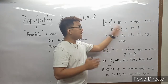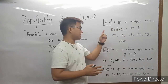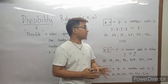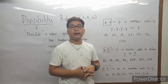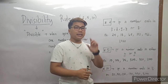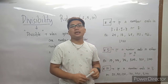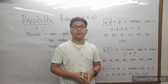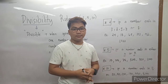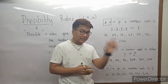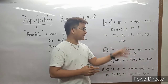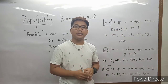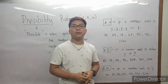Ano ibig sabihin doon? If a number ends in 0, 2, 4, 6, or 8, the number is divisible by 2. Ibig sabihin, titignan lang po natin yung last digit ng number na yun. Tingnan natin yung last digit, then titignan natin kung 0, 2, 4, 6, or 8 — automatic divisible by 2.